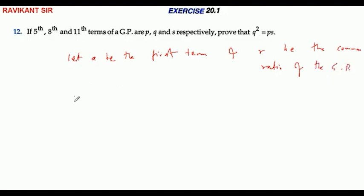The fifth term is P, which equals A times R to the power 4.